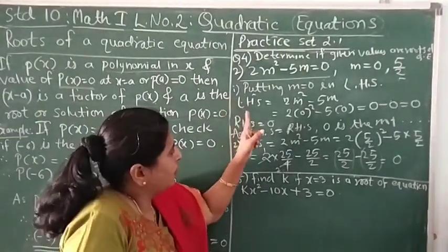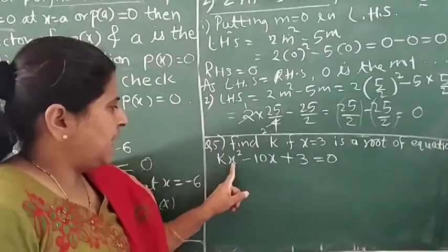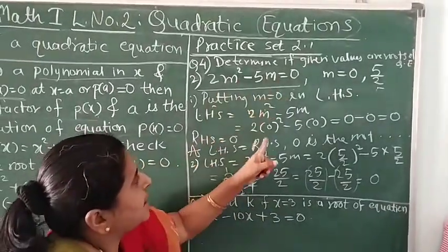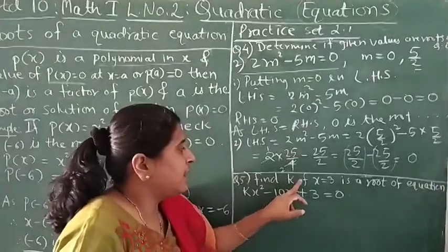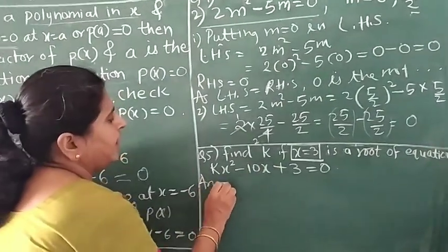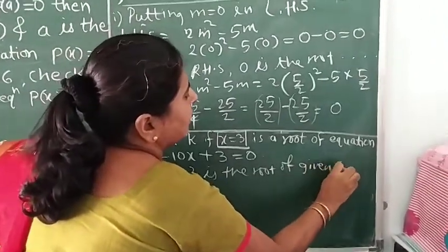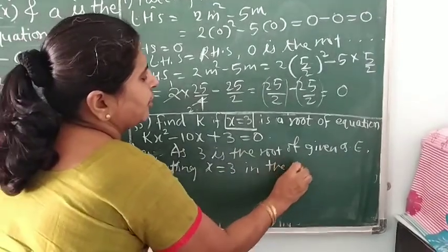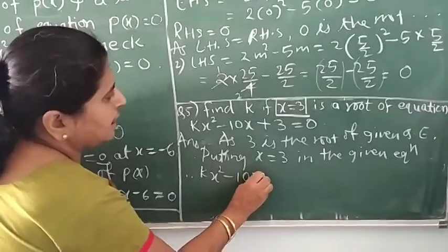In question number 5, it is given in a different way: find k if x = 3 is the root of the equation kx² − 10x + 3 = 0. The difference here is that we are told x = 3 is the root, so we substitute it directly into the equation to find k. Since 3 is the root, it will satisfy the equation.